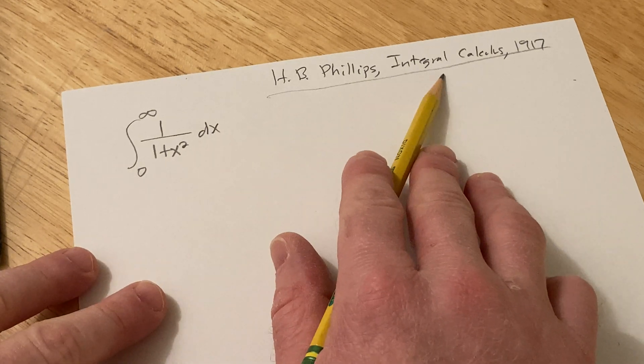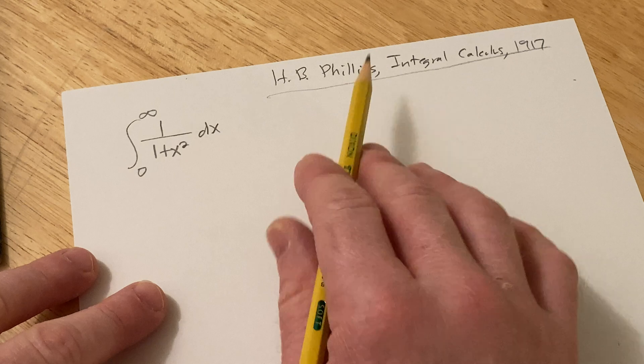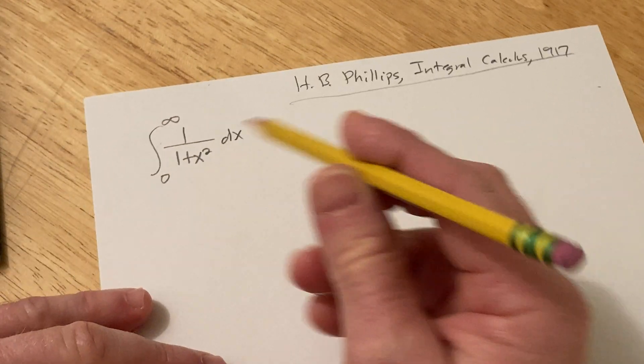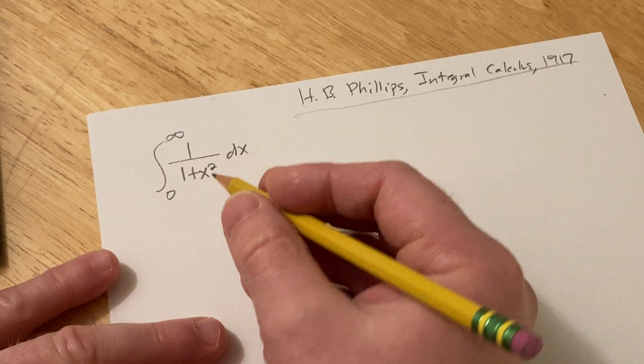The book is called Integral Calculus, and it was published in 1917. And this problem is actually very simple, but I thought I should go ahead and work it out and show you how to do it.